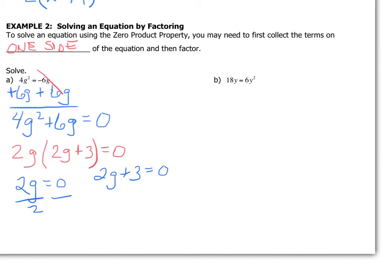Either of those expressions are true and the entire equation will work. So we'll follow our one step for the first one. So g is zero. Second one has two steps to take care of. When I divide by 2, I get g equals negative 3/2.